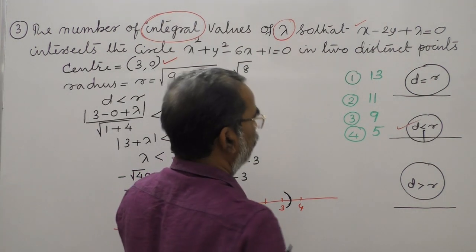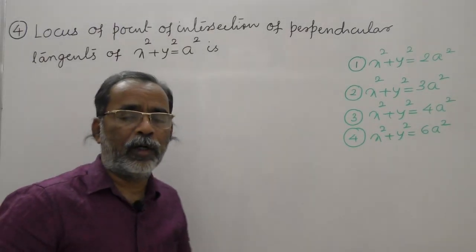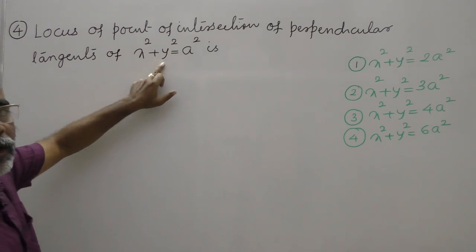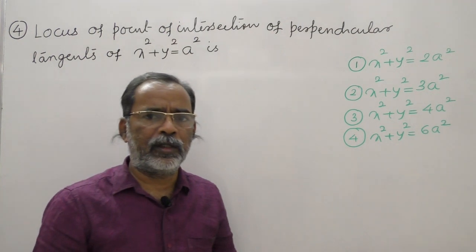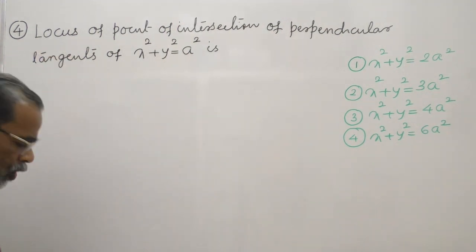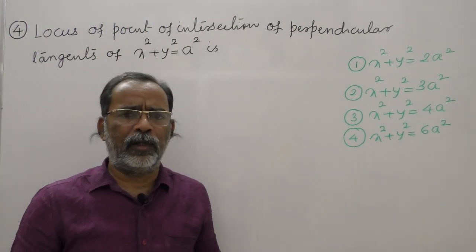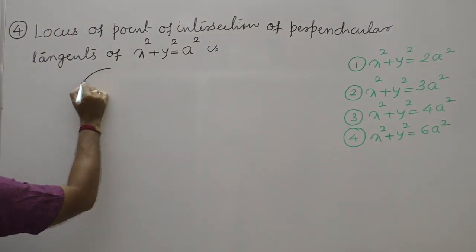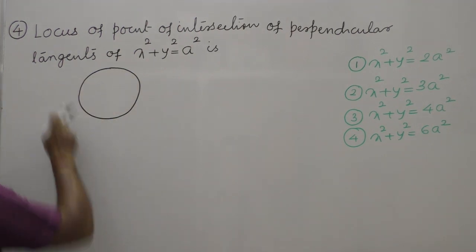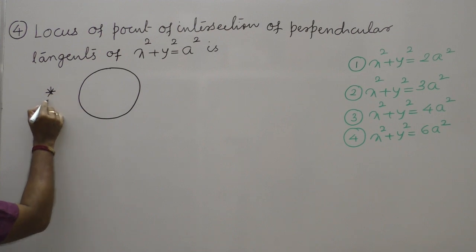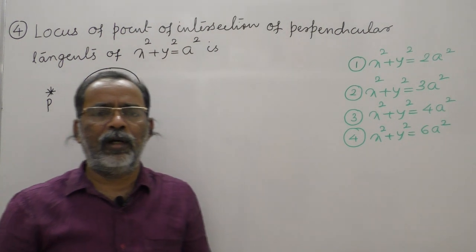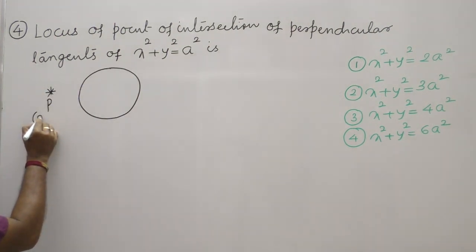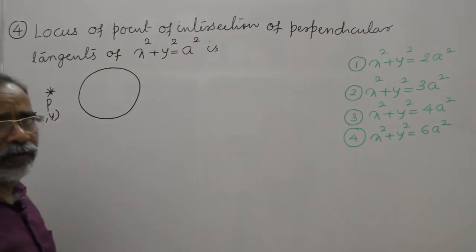Question number four: locus of the point of intersection of perpendicular tangents of this circle. Locus problems come in every chapter — straight lines, pair of lines, circle, parabola, ellipse, hyperbola — they are all important. The given circle is here. The problem is: locus of point of intersection of perpendicular tangents. In locus problems, the working rule is: take a point, state a condition, and write the values.